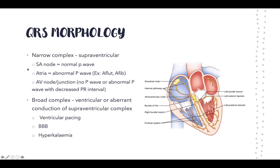When there's a broad complex, it's either originating from the ventricle — ventricular pacing — or there is an abnormality in conduction, for example a bundle branch block, which widens the QRS. Metabolic disorders such as hyperkalemia are another cause as well.